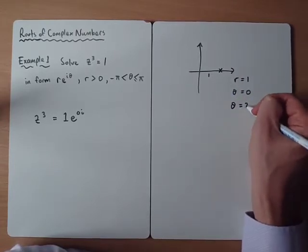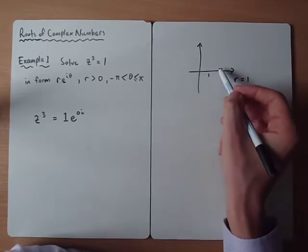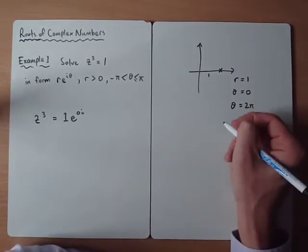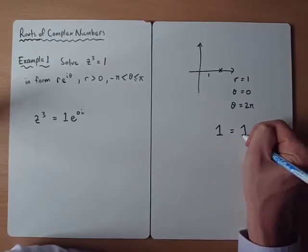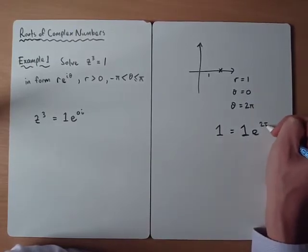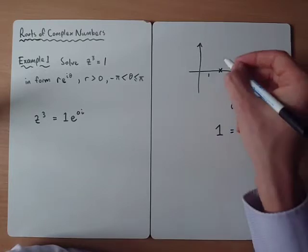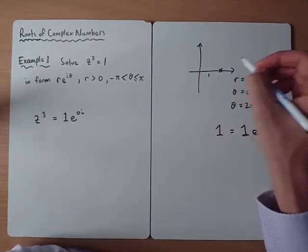I could also have said theta equals 2π. Because if we rotate through 2π, we're back at that point there. So equivalently I could have written 1 as 1e to the 2πi. I could have also used theta equals 4π if I wanted to. Because we'd have done two full rotations, but we'd still be at that same point.